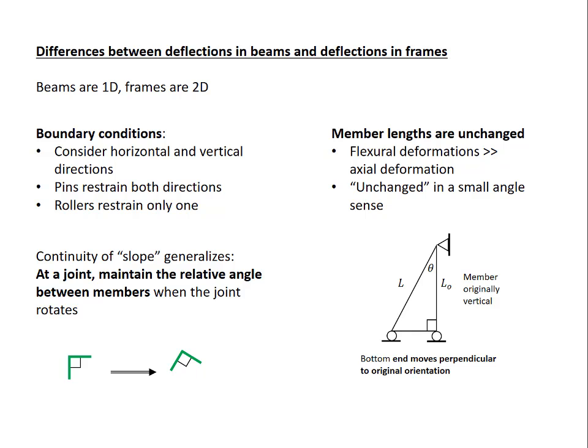Let's see what it means to be unchanged in a small angle sense. Here, we're showing a member that was originally vertical. It had a length L0. The bottom end moved perpendicular to the original orientation. It now has a length L and is inclined at an angle theta. For the member to truly be the same length, it would have to move along the dashed arc shown here.